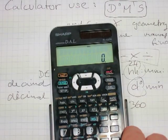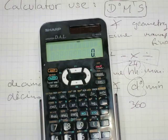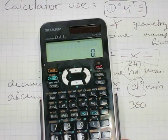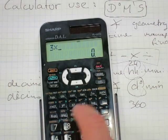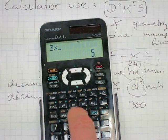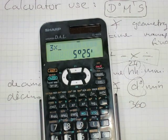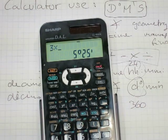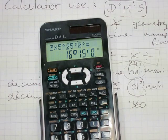We can use it for multiplication. We can multiply time. See, three people worked 5 hours and 25 minutes each. How much time did they work all together? They worked 16 hours and 15 minutes.